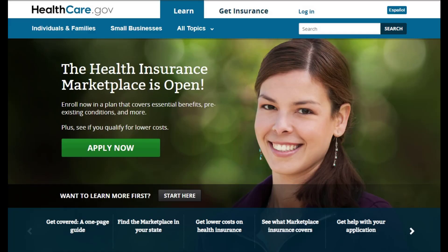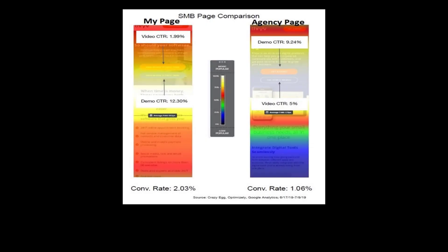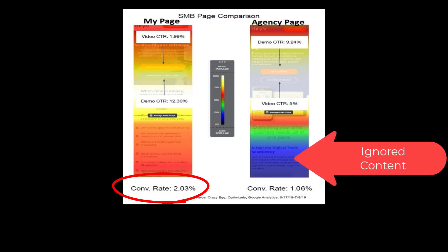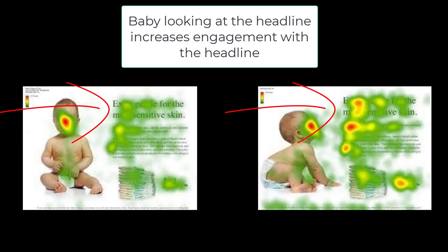Even the images you use will either help you grow your online customer base or repel them. We can easily see this with heat maps and how people look at your marketing material. Images can lead people to read more of your content or cause them to bounce. Common wisdom says to have a smiling woman look at your potential customer, but in testing this actually pulls eyes away from the marketing message and lowers the conversion rate. However, having that same model look at your headline or key marketing concepts actually increases conversions.